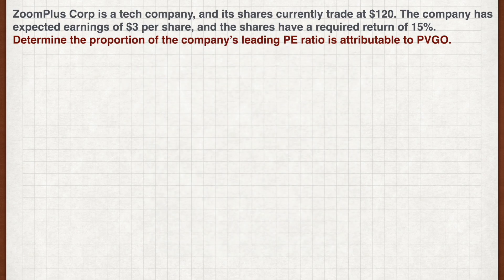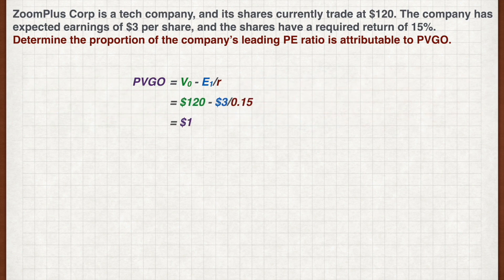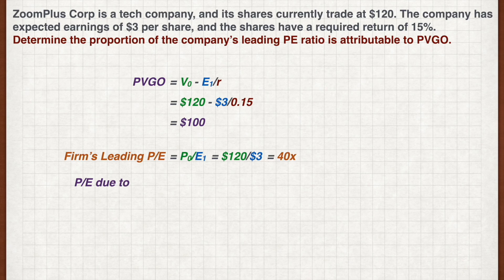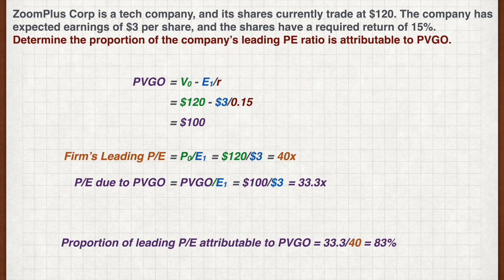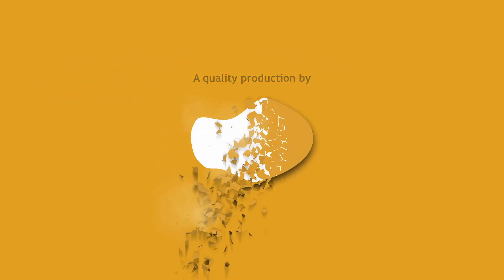And we're back. First, let's calculate the PVGO, which is the value of the company minus E1 over R. This gives us a PVGO of $100. Based on the stock's current price, the PE ratio is 40 times. And the PE attributable to PVGO is 33.3 times. As such, 83% of the firm's leading PE ratio is attributable to PVGO.